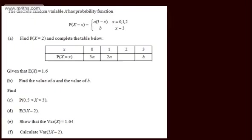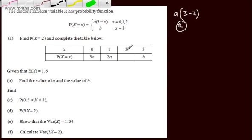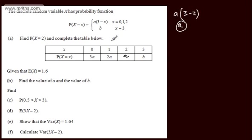Let's look at another question. The discrete random variable x has probability function: P(X = x) = a(3 − x) for x = 0, 1, 2, and b for x = 3. In part a we need to find P(X = 2) and complete the table. Substituting x = 2 gives a(3 − 2) = a × 1 = a. So P(X = 2) = a.